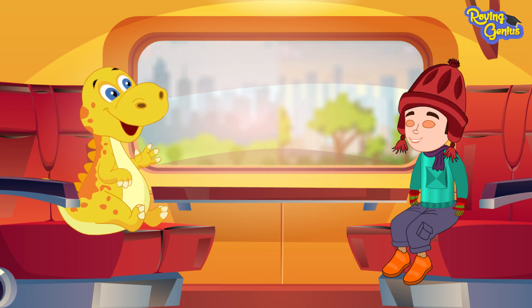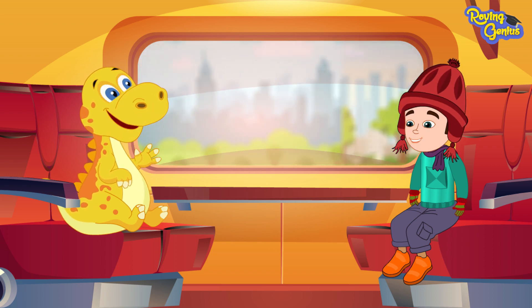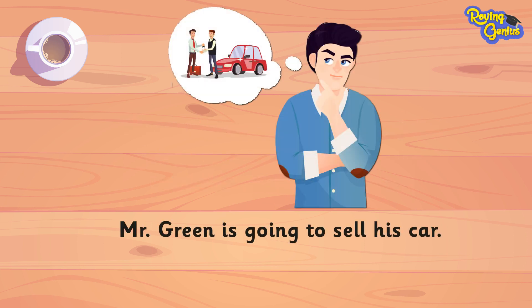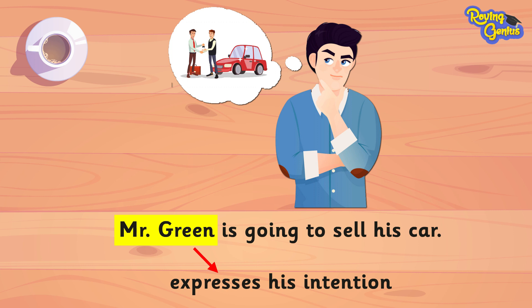By using 'going to.' We use 'going to' for forming the future tense when there is an intention about the future. Let us say that Mr. Green is going to sell his car. In this sentence, Mr. Green expresses his intention to sell his car.